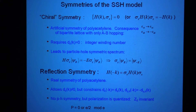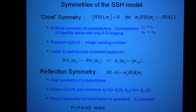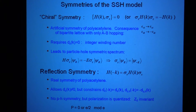What this chiral symmetry gives us — first of all, if we enforce this symmetry, it constrains the z-component of d to be zero. And what this means is that there's actually a topological invariant which is an integer: the number of times d wraps around the origin as a function of k.